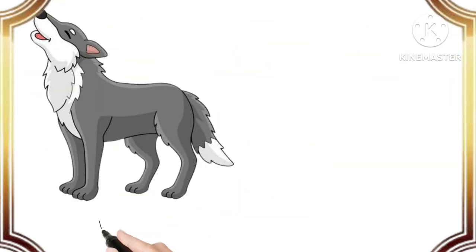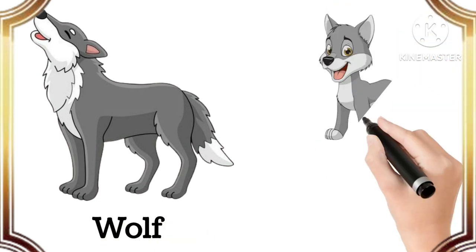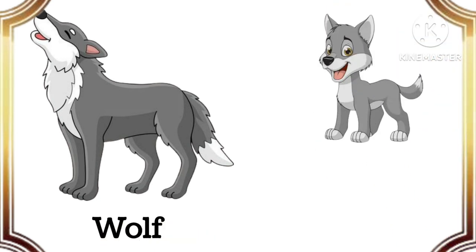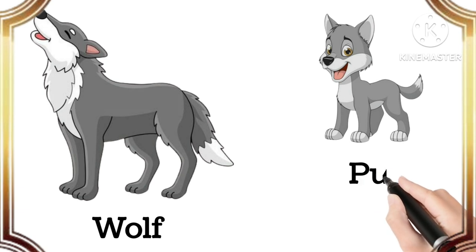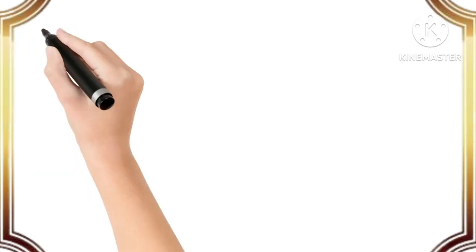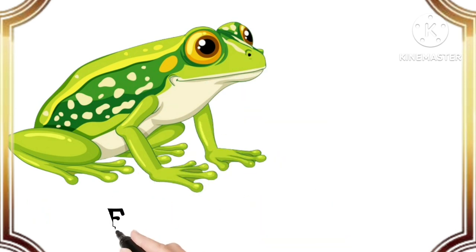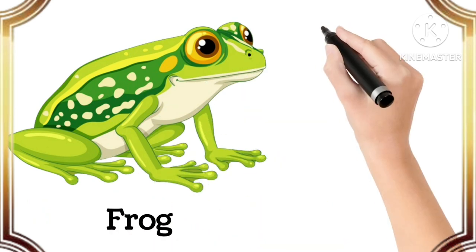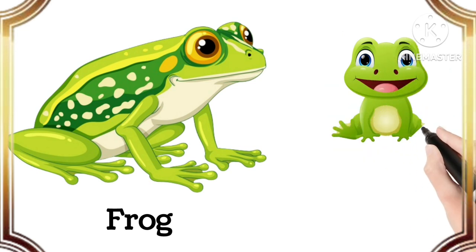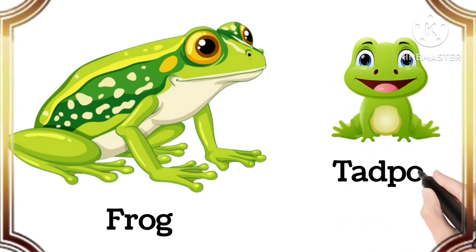Wolf. The baby of wolf is called pup. Pup. Frog. The baby of frog is called tadpole. Tadpole.